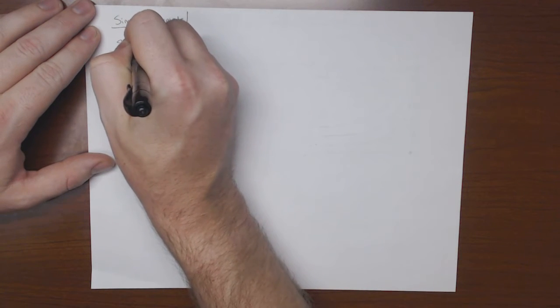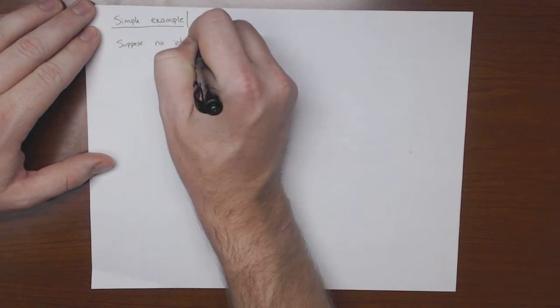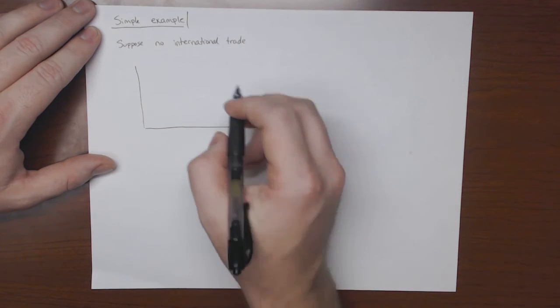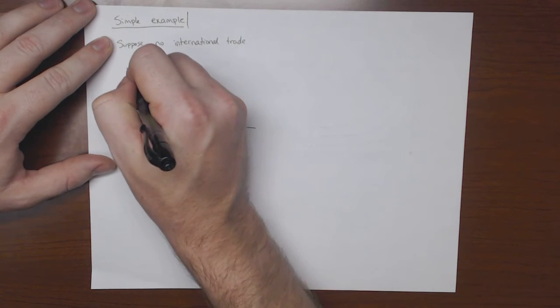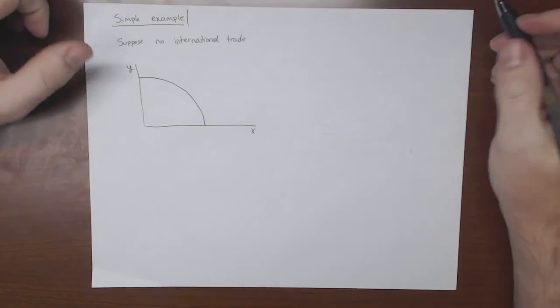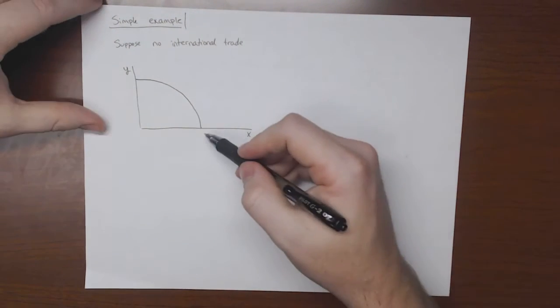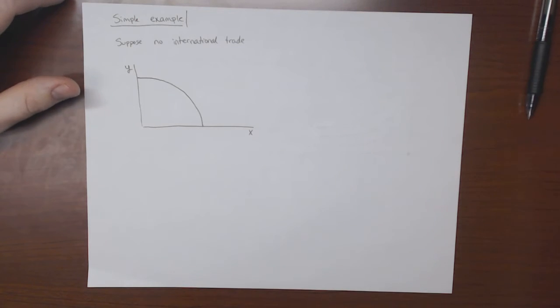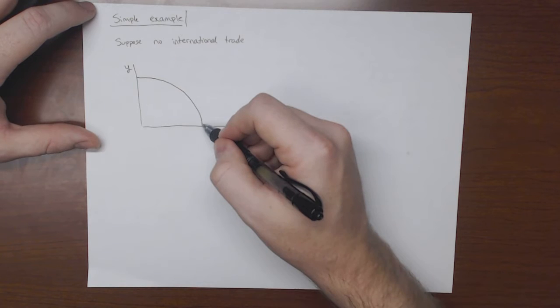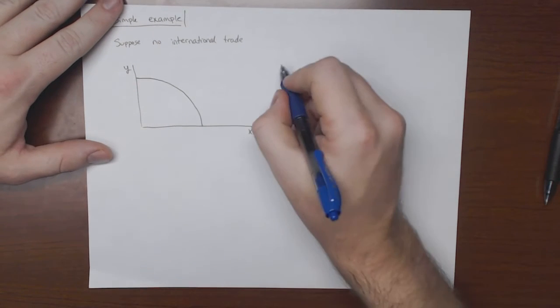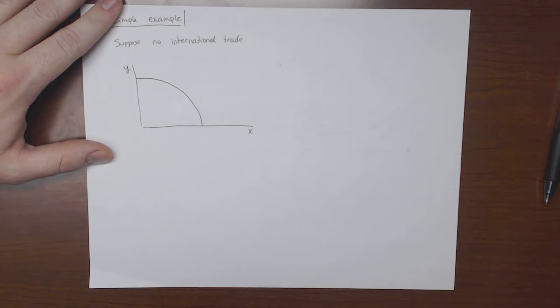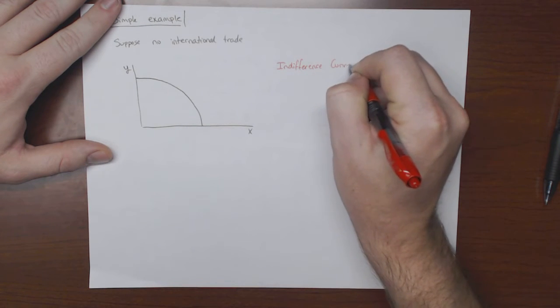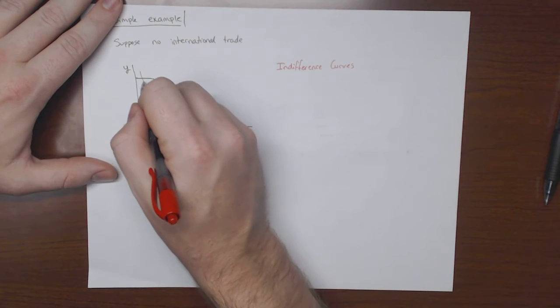So simple example to illustrate this, and then we'll make it a little more complicated. So let's suppose no international trade. Okay, so there's no such thing as international trade. We'll put in our PPF curve. And notice that this here says that any one of these points along this line, and beneath it as well, we can produce. But we don't know where to produce. We just know that it should be somewhere on this line. So I'll use red because red shows up better. Red will be indifference curves. And let's just draw a couple of them.